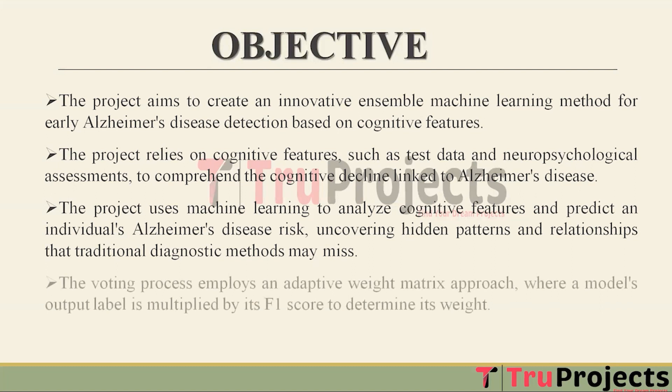In the voting process, the project uses an adaptive weight matrix approach to determine the significance of each model's output. This is achieved by multiplying a model's output by its F1 score. The resulting weight reflects the model's performance and contribution to the ensemble, enhancing the overall prediction accuracy.